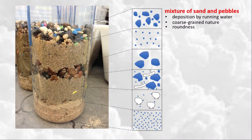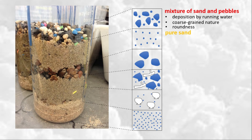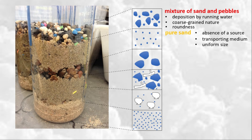The longer the duration of transport, the greater the chance for abrasion, and therefore the greater the degree of roundness. The next layer is composed of sand with no coarse material such as pebbles. This suggests either the absence of a source for coarser materials, or that the transporting medium does not have the capacity to transport sediments coarser than sand. The uniform grain size also suggests a transporting medium that effectively segregates or sorts sediments into separated grain sizes.